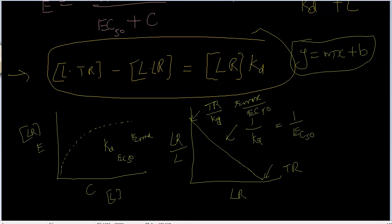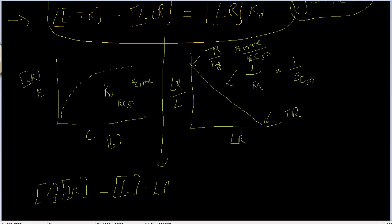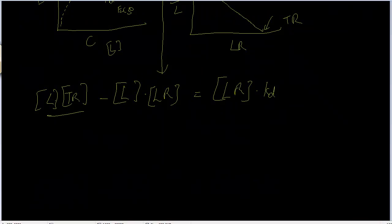Let's get back to solving the equation. I'm going to rewrite this as L times TR minus L times LR equals LR times KD. What I'm going to do is divide the entire equation by L. So L gets cancelled here.